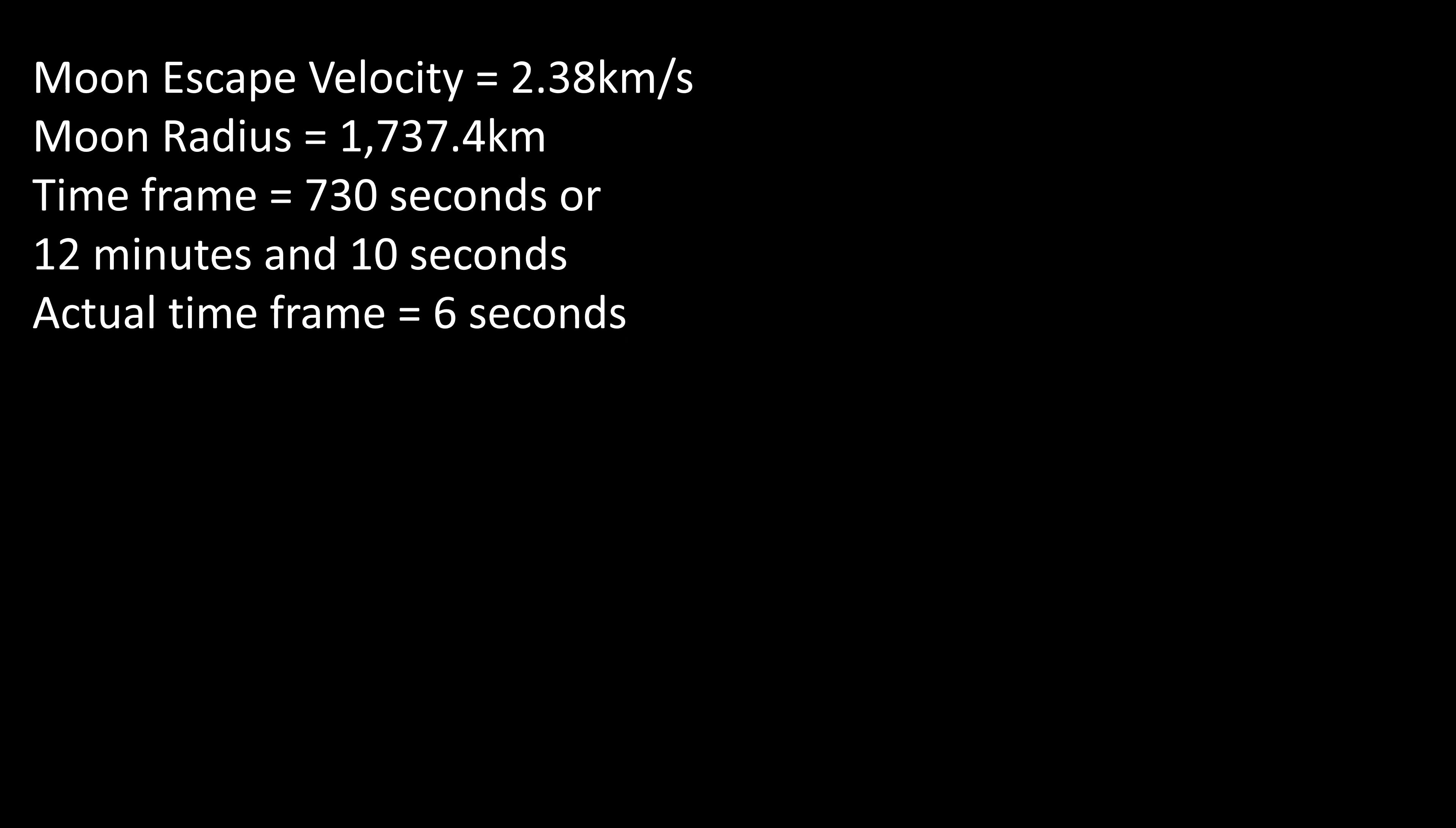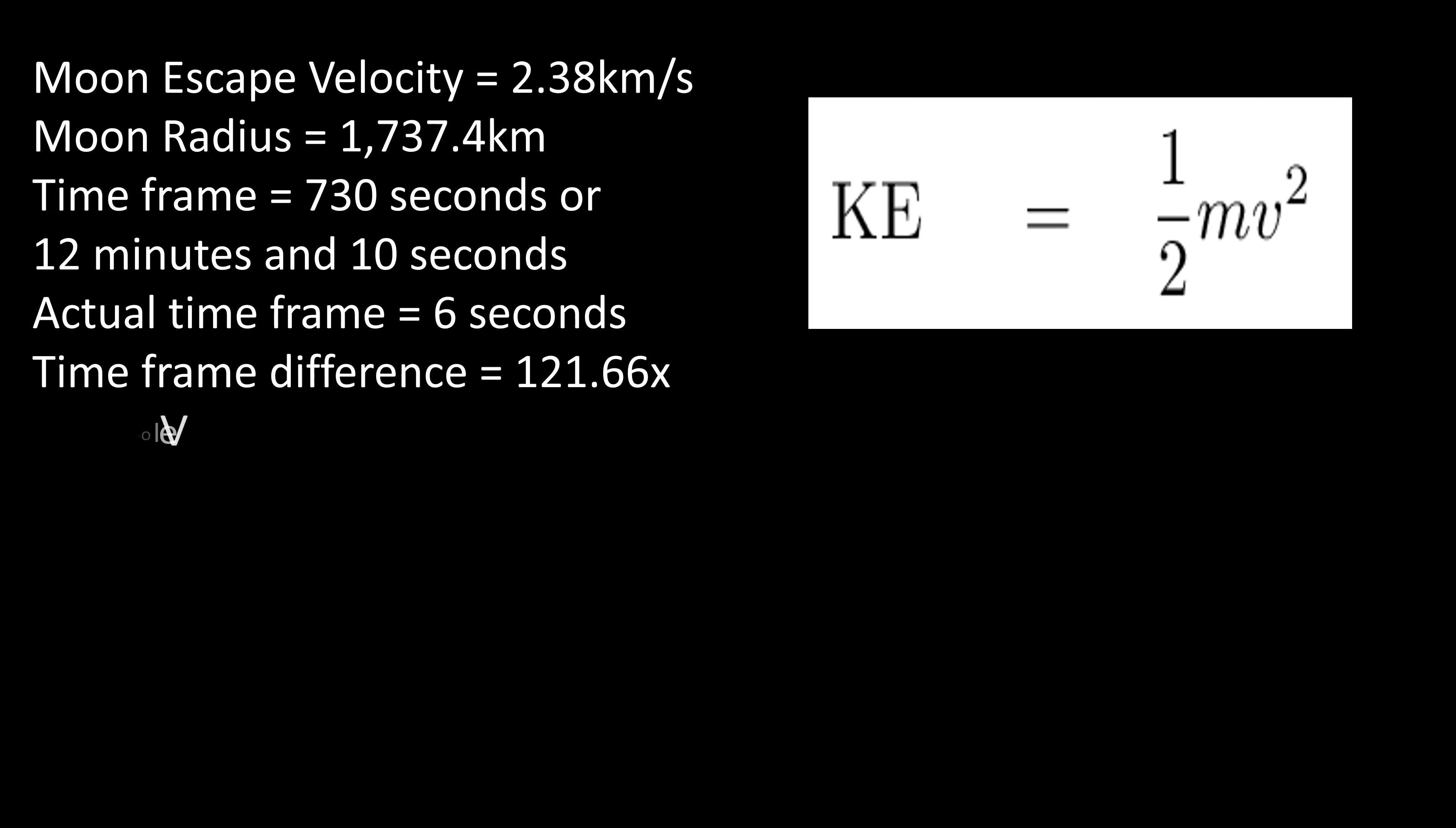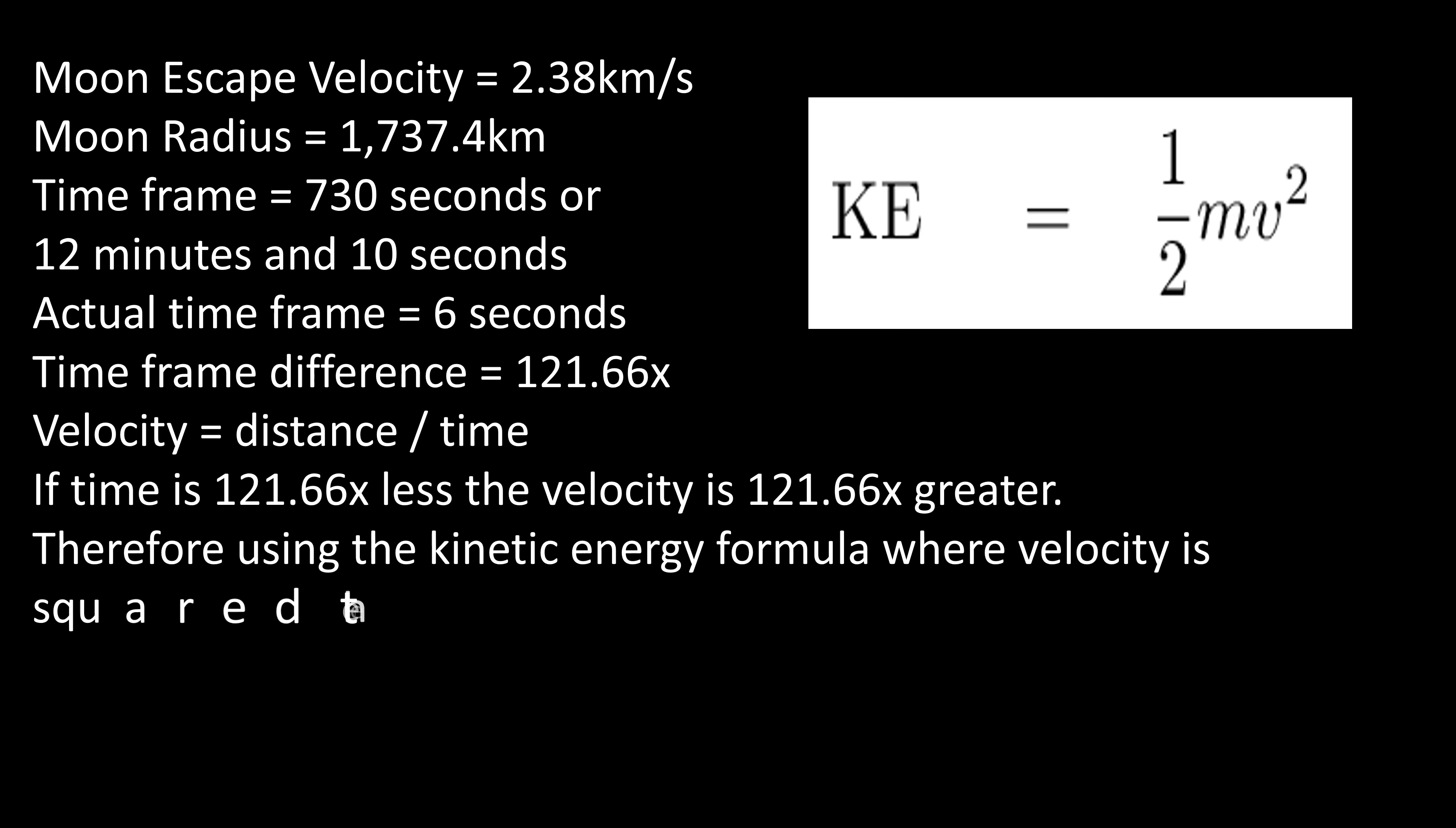Now that we have established the time normal moon busting would take and how fast Master Roshi did, we can get the difference in the time frame at 121.66 times. Now, this is with kinetic energy and why the velocity was important. Velocity is distance divided by time, meaning that if the time frame is 121.66 times slower, then that would mean the velocity is 121.66 times greater. Therefore, in the kinetic energy formula, where the velocity is squared, the multiplier is 14,803. Therefore, Master Roshi is 14,803 times moon busting.